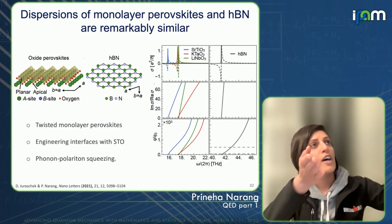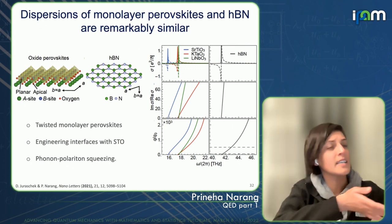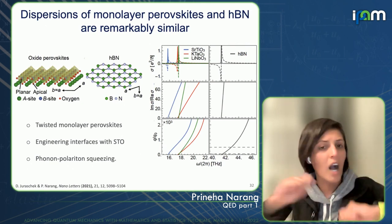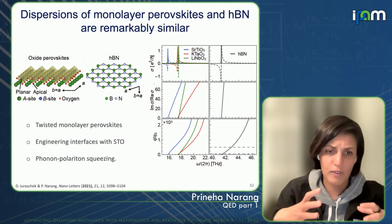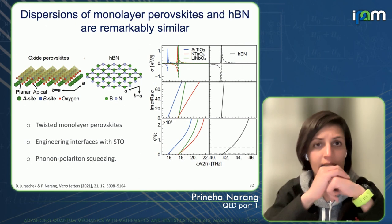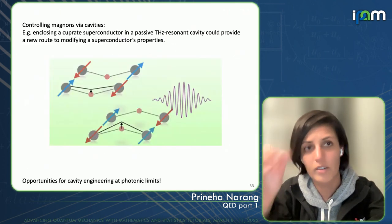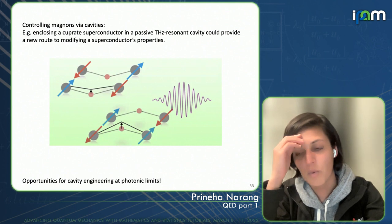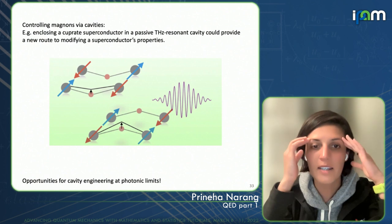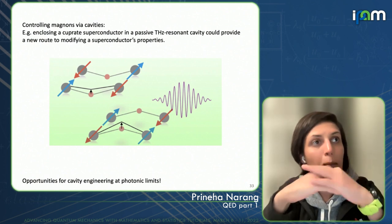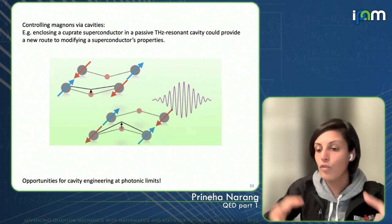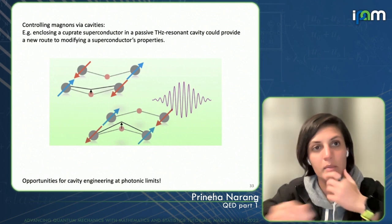We found that phonon polaritons in a monolayer of an oxide perovskite are actually very stable, extending everything we've developed for conventional phonon polaritons in the near-mid IR all the way out to the terahertz. The original reason we started looking at phonon polaritons is the opportunity to couple to this phonon via the cavity — and not just stop at the phonon, but go from the phonon to some other order parameter in the material.